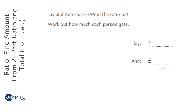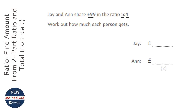The best way to think of these questions is that the money here, £99, is split into an amount of piles. Jay gets 5 of those piles and Ann gets 4 of those piles. The order the names come in the question is the order they are in the ratio. So this is Jay's stash and this is Ann's stash.